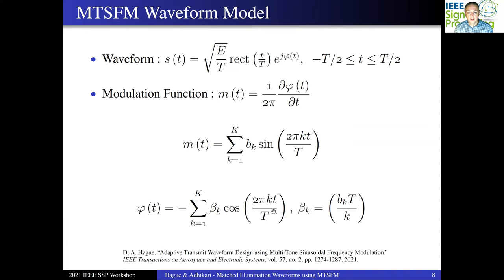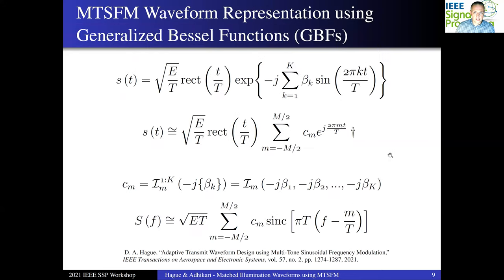These are the modulation indices, given in terms of those Fourier coefficients b sub k. If we take a direct implementation of this FM waveform model, this is what we get for the waveform time series. This doesn't really lend itself well to deriving a closed-form expression for things that we care about, such as the spectrum. It turns out we can actually represent this waveform in a different manner, as a complex Fourier series. In fact, we can truncate it to be a finite complex Fourier series with some generic set of coefficients cm.